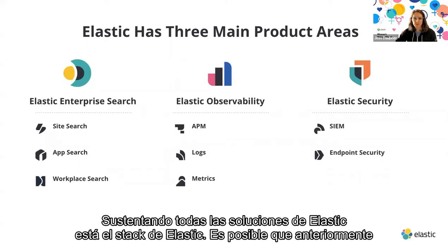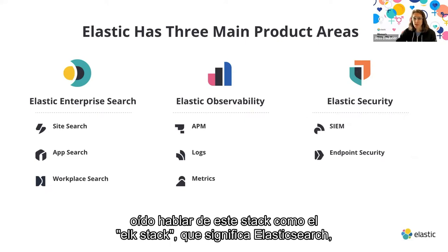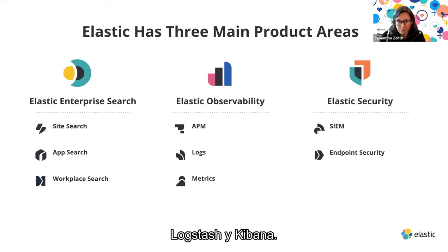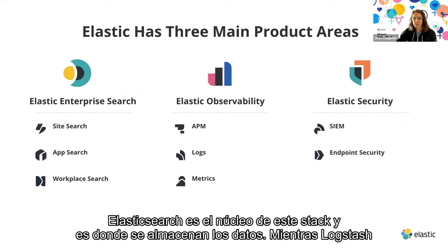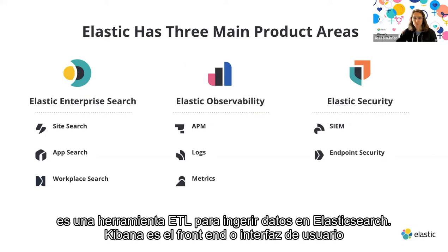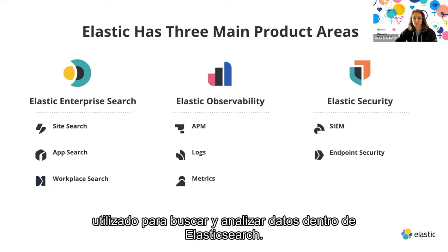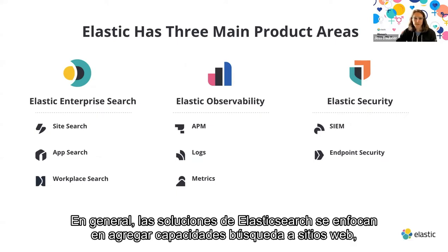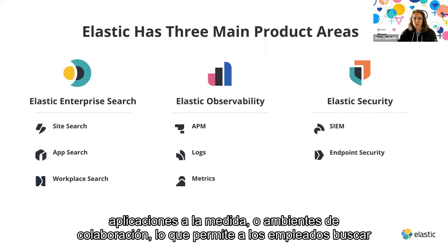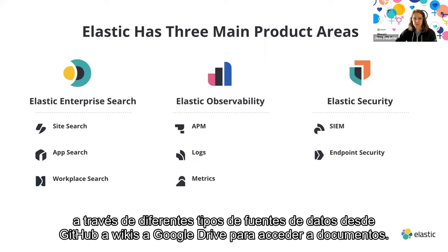Underpinning all of Elastic's solutions is the Elastic stack, previously known as the ELK stack, which stands for Elasticsearch, Logstash, and Kibana. Elasticsearch is the core of this stack where data is stored. Logstash is an ETL tool for ingesting data into Elasticsearch. Kibana is the front end or user interface used for searching and analyzing data. Elastic search solutions focus on adding search functionality to websites, custom applications, or enabling employees to search through data sources from GitHub to wikis to Google Drive.